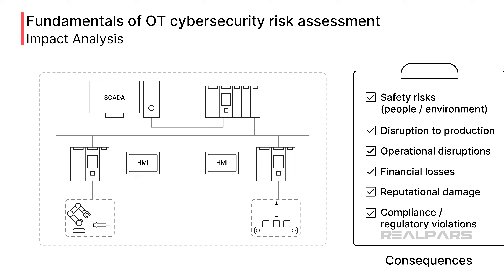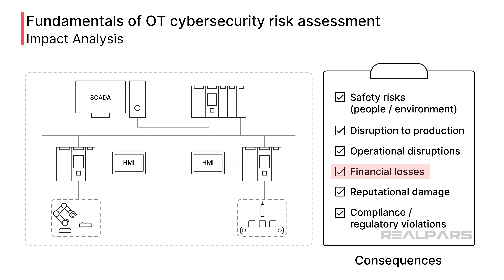Now that we know our threat landscape, we must assess the consequences of actually having a compromised system due to an attack. These consequences can take many forms, such as safety risks to personnel or the environment, disruption to production, operational disruptions, financial losses, reputational damage, and regulatory and compliance violations. The consequences your facility may face depend on your unique situation and may include many other risks.